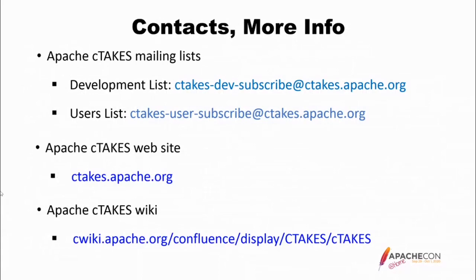Here are contacts and more information. You can write to the development list or the users list — all questions are fair, nothing is too simple. The cTAKES website is ctakes.apache.org. The wiki for cTAKES has a lot of information on how to do things, what things look like, some questions and answers, etc. These presentations are all recorded, and you should be able to look them up afterwards on YouTube or another platform. The slides will also be put on the cTAKES website.